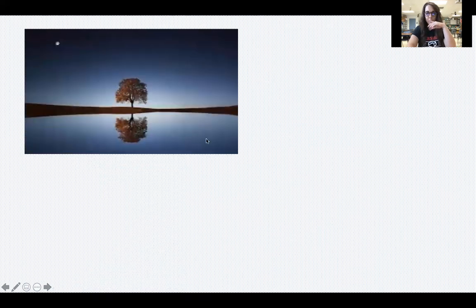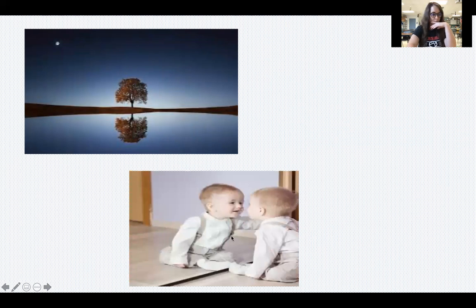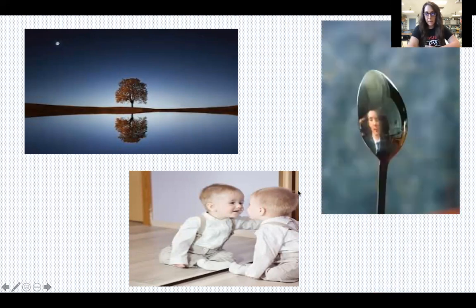Here are some examples of reflection. I have a picture of a tree reflected in very still, flat water — because it's still and flat, we can see the reflection. Another example of reflection would be looking into a mirror. Mirrors are really good at reflecting light because they're smooth and flat. Even metal objects like spoons or the side of a car — anything that's metal, shiny, and flat — is really good at reflecting light.